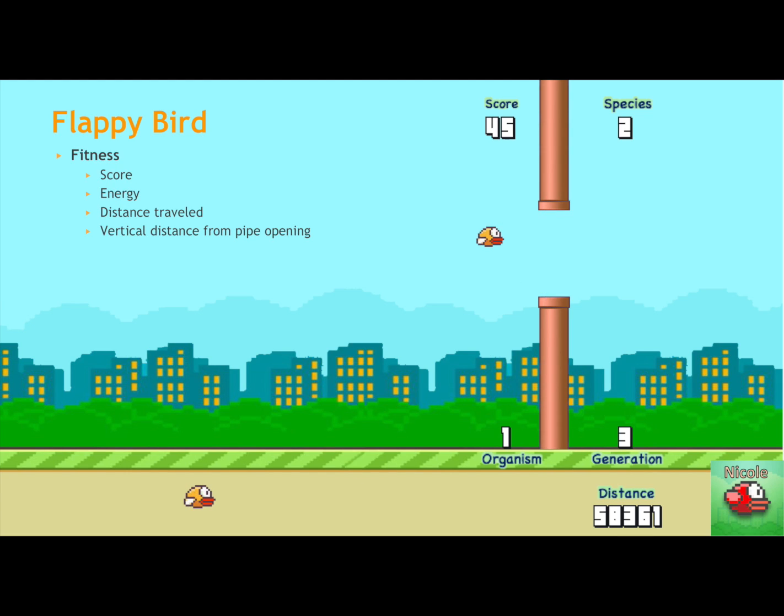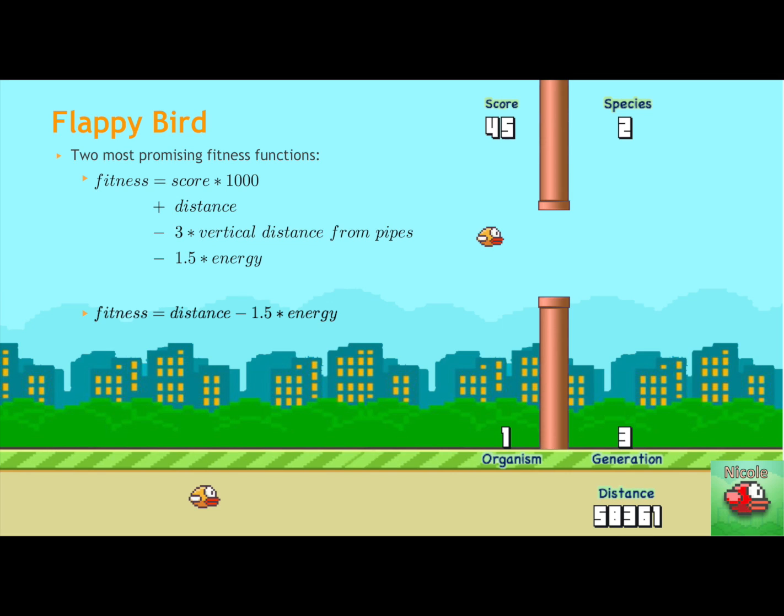We also had a fitness score, as Michael was saying, which was a linear combination of the number of pipes the bird has gone through, its total energy expended, which was its number of flaps, the distance it's traveled, and the vertical distance from the pipe opening, which was able to scale it more towards the center to be able to achieve passing through the pipes better. And these are two fitness functions that we found to work the best with our system, and gave us the best results.